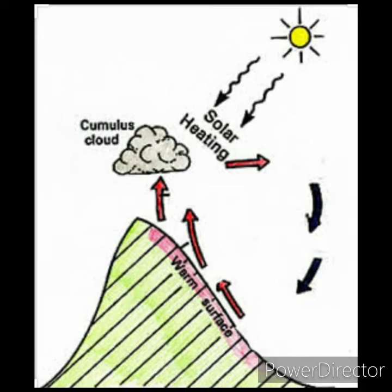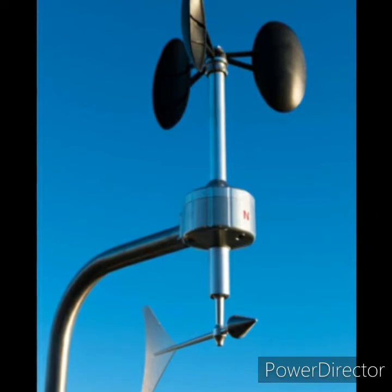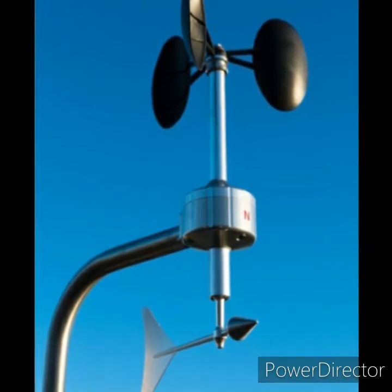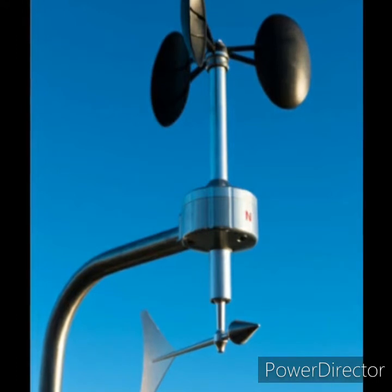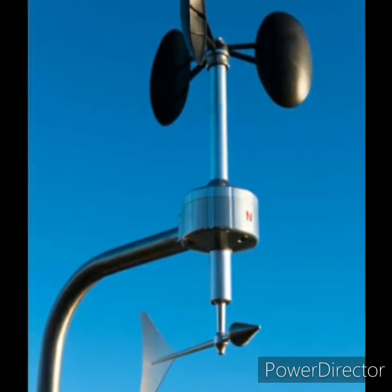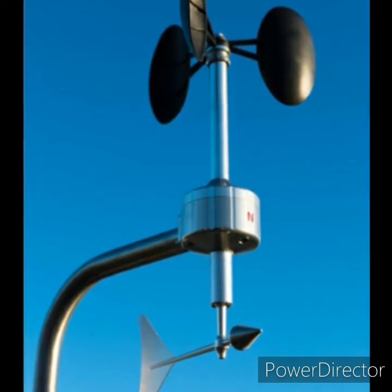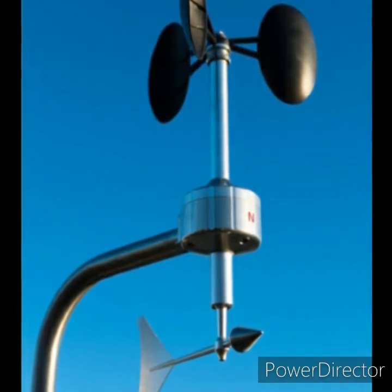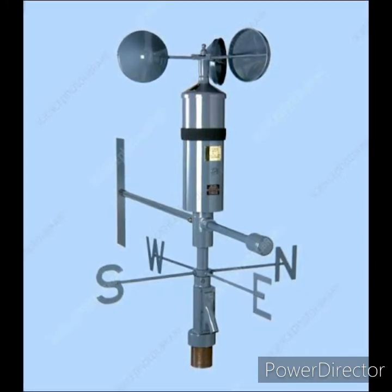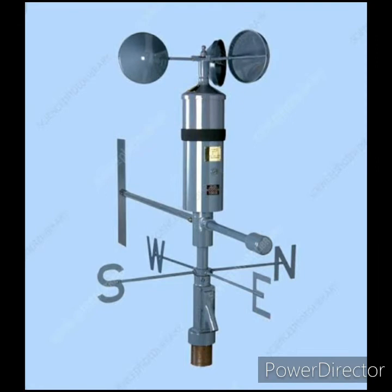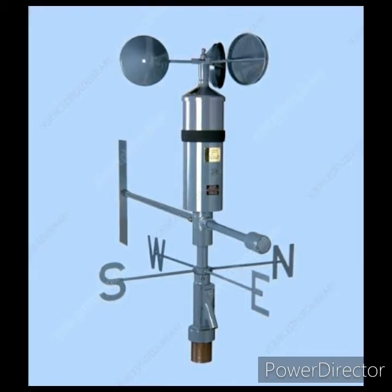Meteorologists measure wind direction using the wind vane or weather vane. Wind speed is measured by an anemometer. A meteorograph, or triple register, is an instrument which records wind speed, wind direction, sunshine, and precipitation.